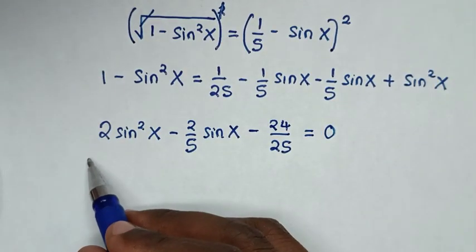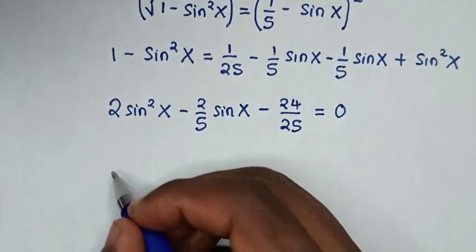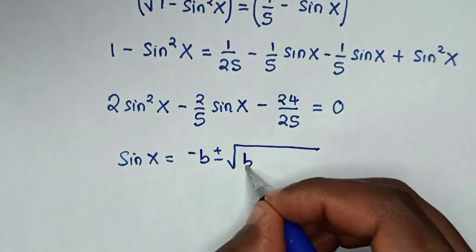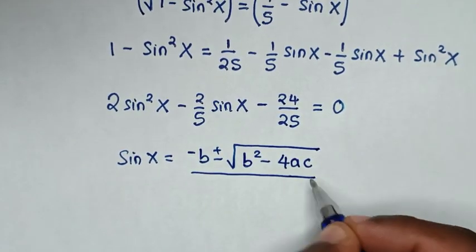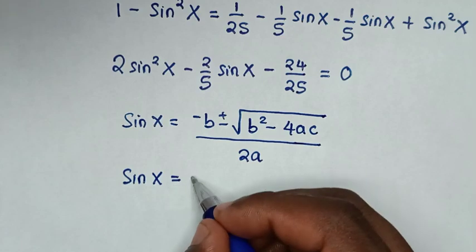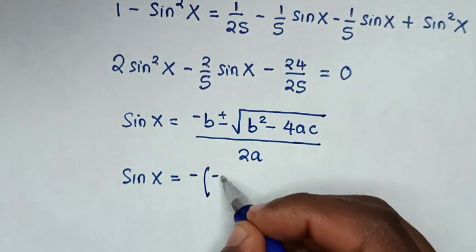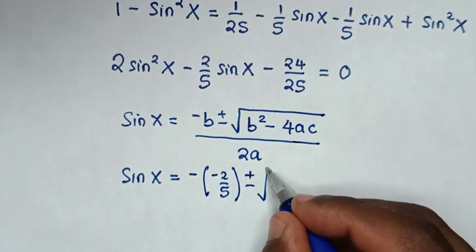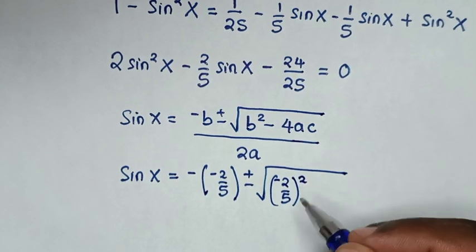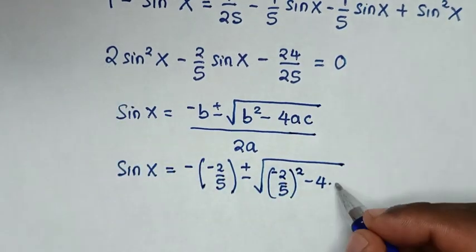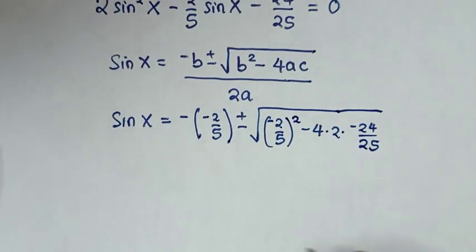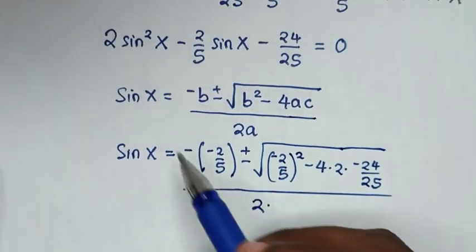This is a quadratic equation in sin x, so we solve it using the quadratic formula: sin x equals negative b plus or minus the square root of b squared minus 4ac, all over 2a. Here a equals 2, b equals negative 2 over 5, and c equals negative 24 over 25. So we have sin x equals negative times negative 2 over 5, plus or minus the square root of negative 2 over 5 squared minus 4 times 2 times negative 24 over 25, all over 2 times 2.